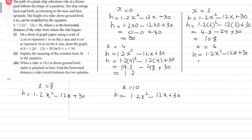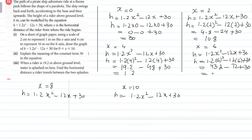x = 6 کے لیے: 1.2(6²) − 12(6) + 30 = 1.2(36) − 72 + 30 = 43.2 − 72 + 30۔ تو 43.2 + 30 = 73.2 minus 72 = 1.2۔ تو h کی value 1.2 آئی۔